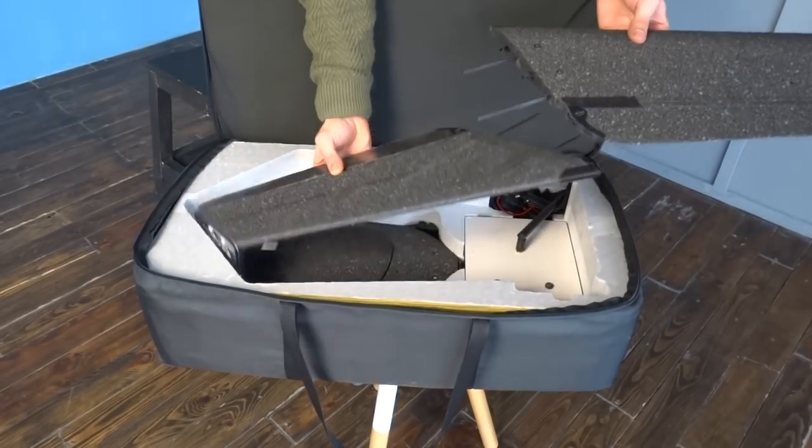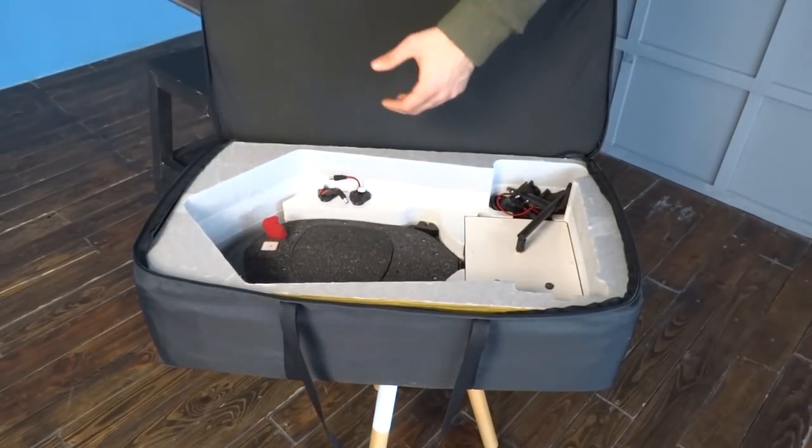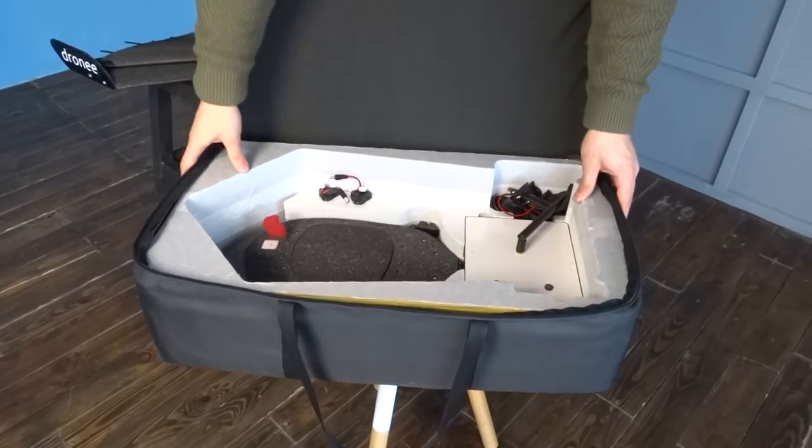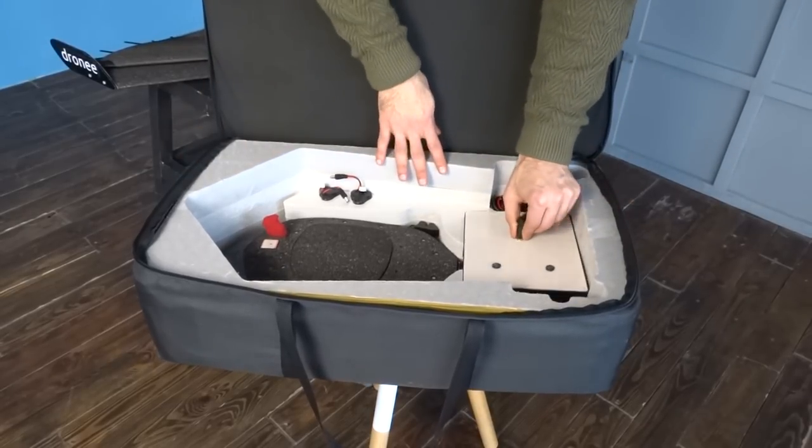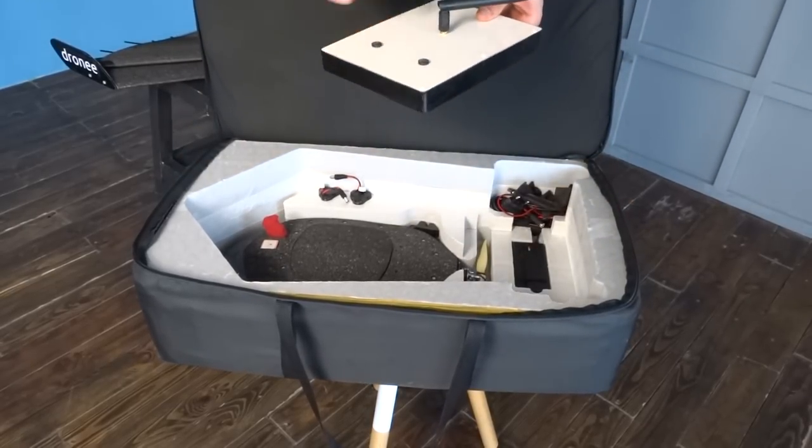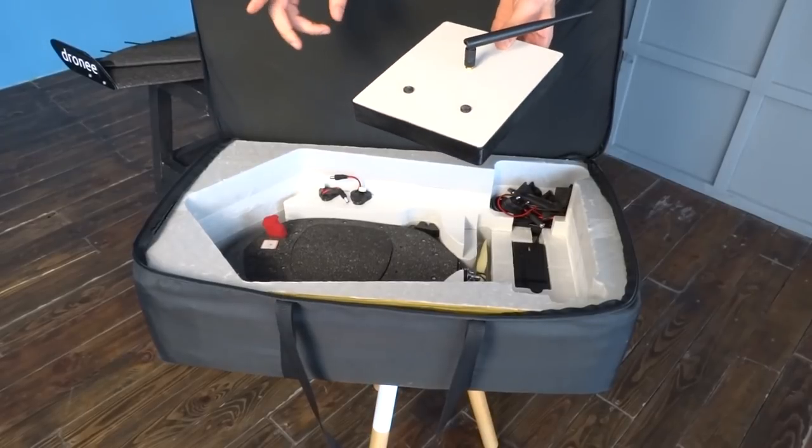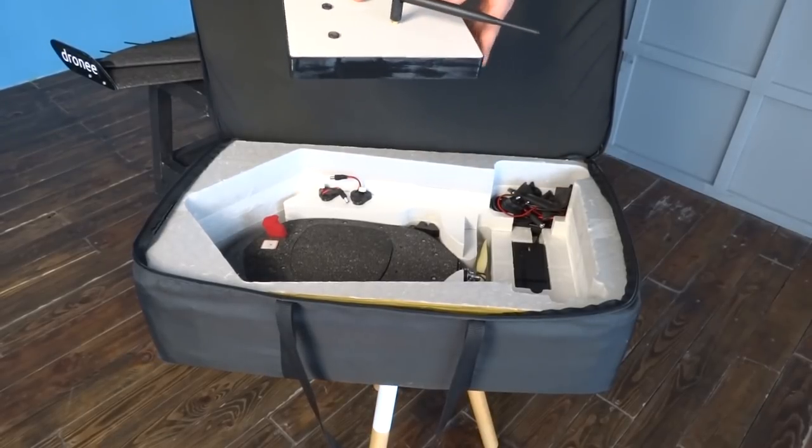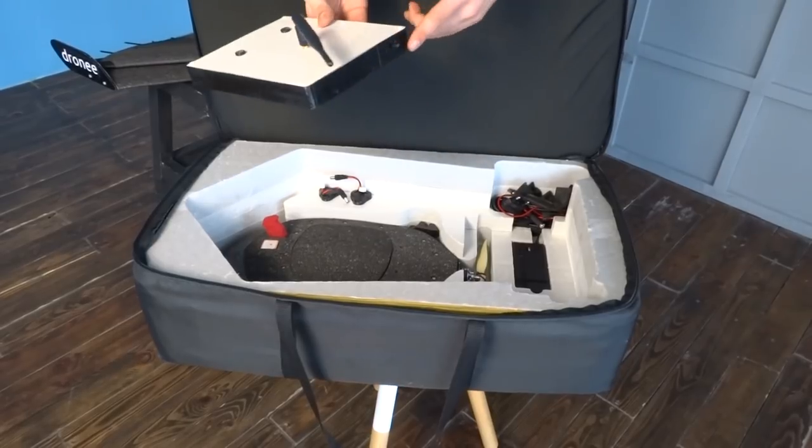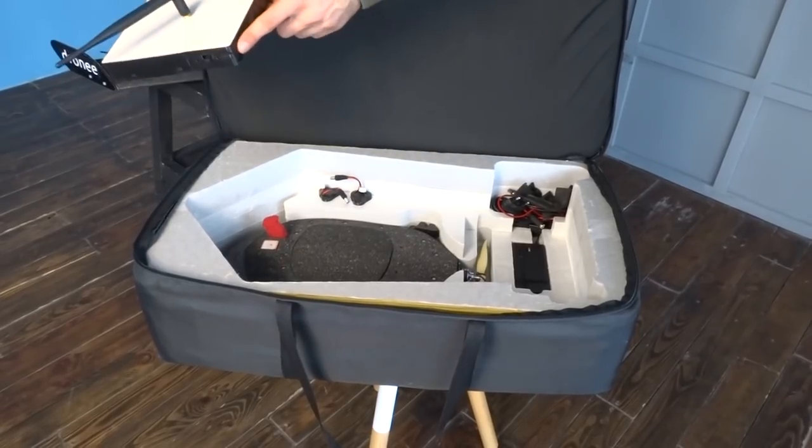And this is the other part of the wing. In the package we have a hub that makes communication between Dronee and the tablet wirelessly and it's standalone powered with a 3 cell battery. It has an on-off switch and LED indicators.